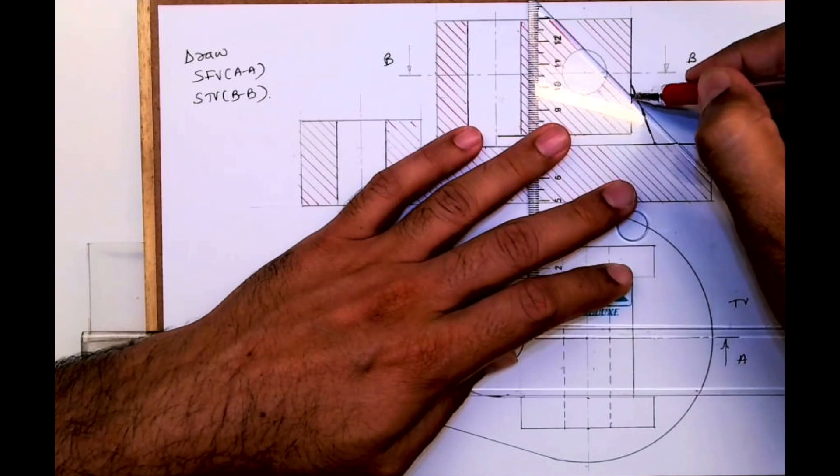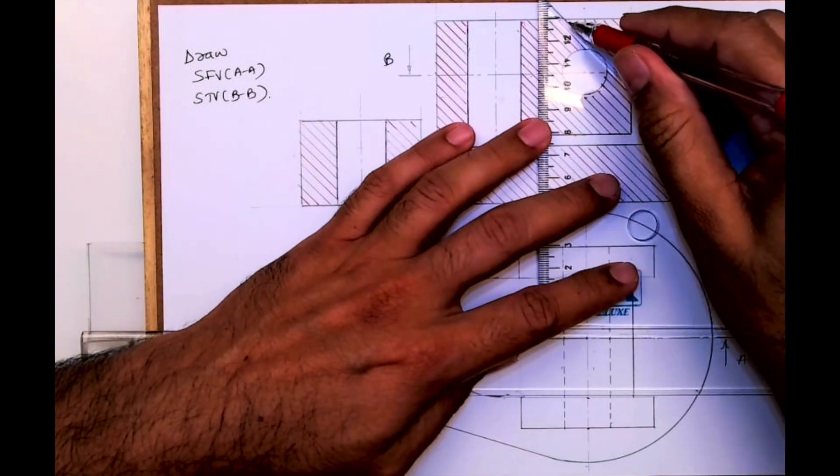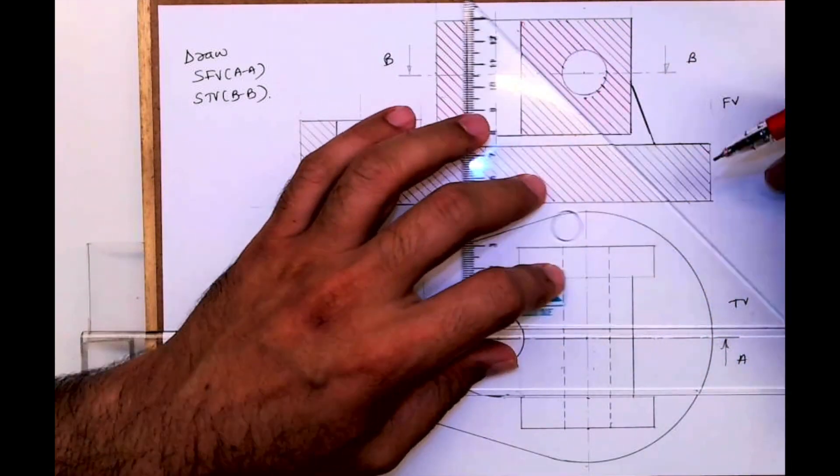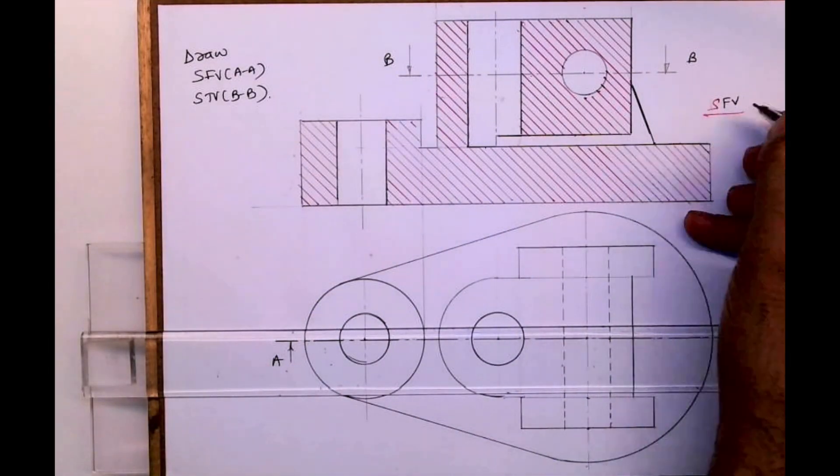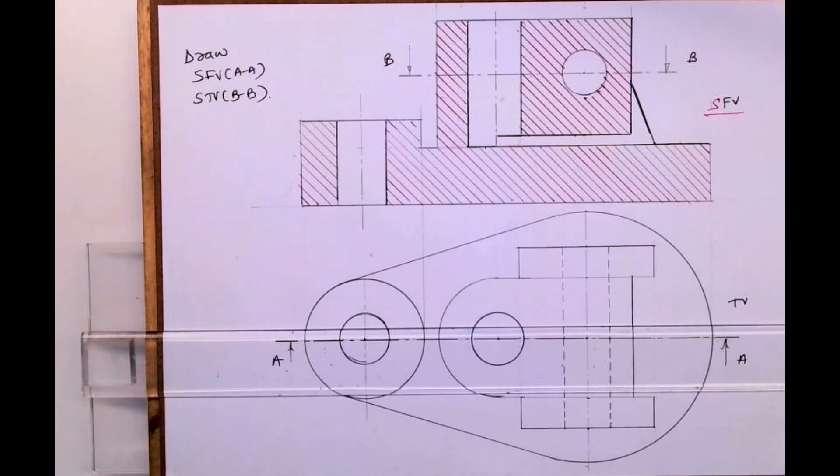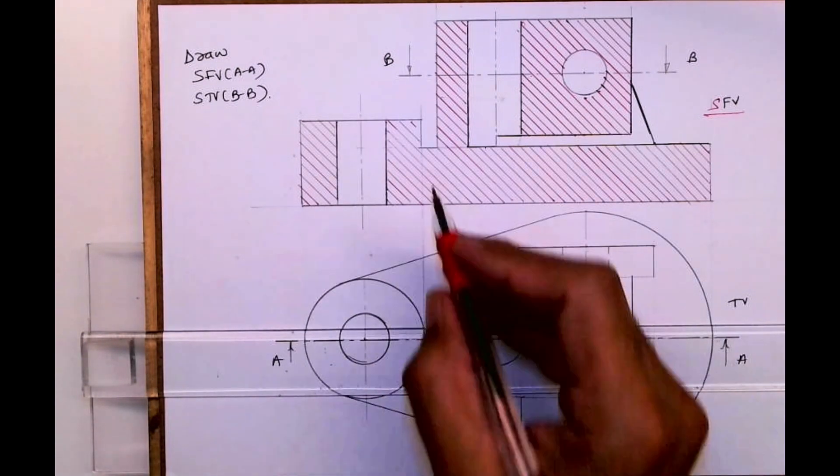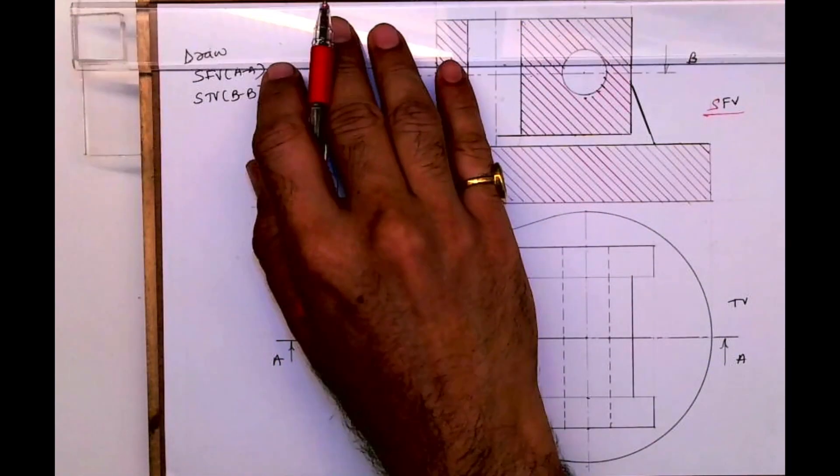Now we'll see sectional top view. It is getting cut from here, so this won't be affected. This part will be hatched, then this circle will be as it is.